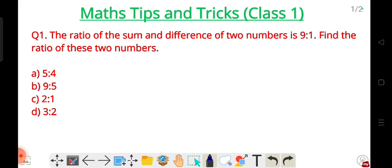So let's start. Today we'll target Class 1. So the first trick, the method trick. Let's start. The ratio of the sum and difference of two numbers is 9 is to 1. Find the ratio of these two numbers.